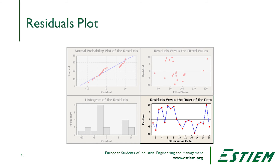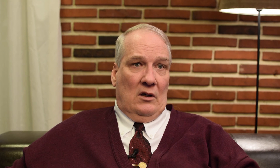In the fourth panel, residuals versus order of the data, we should see randomness. But here we see tight coupling, which might indicate the data is auto-correlated. This doesn't look very good. So what could we do to understand the process?